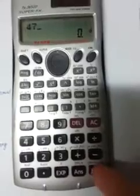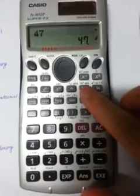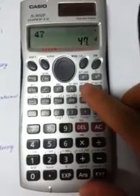How do we change 47 in denary number to binary number? We can do it by simply pressing 47, then exe. So it is 47 denary number, and then we press binary. You see bin here, press binary.